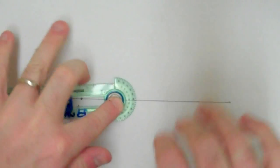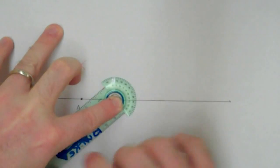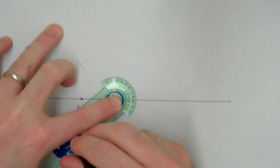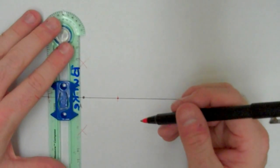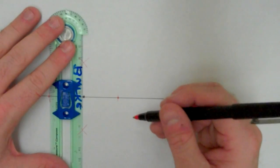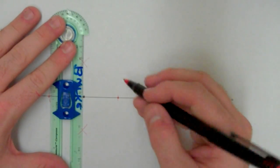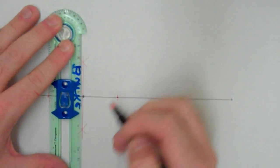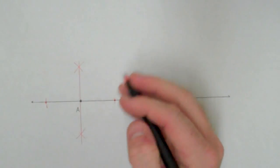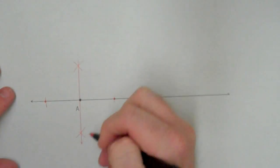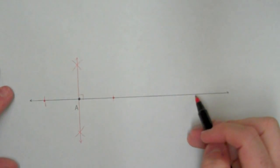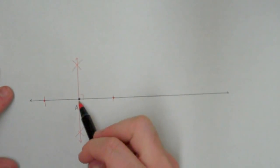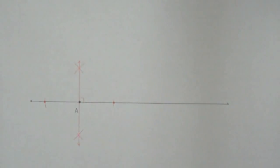Mark above, mark below. And if I connect these two intersections with this point, I have created a perpendicular line to a given line through a point given on that line.